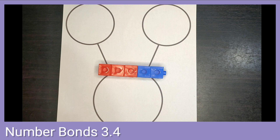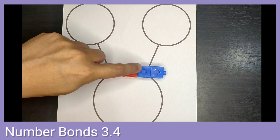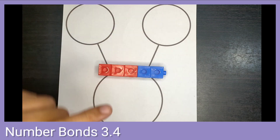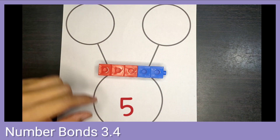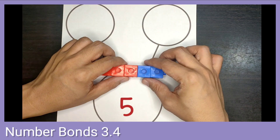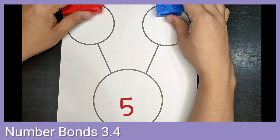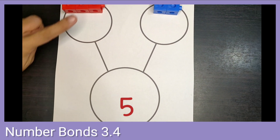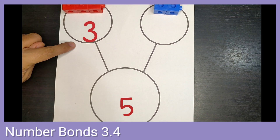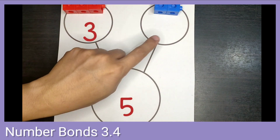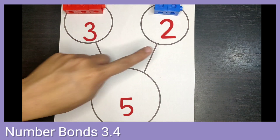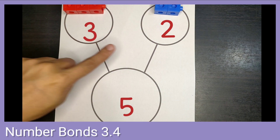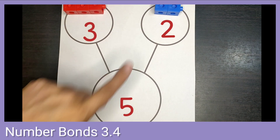Here's another set of connect cubes. 1, 2, 3, 4, 5. Let's separate them by color. 1, 2, 3, 4, 5.